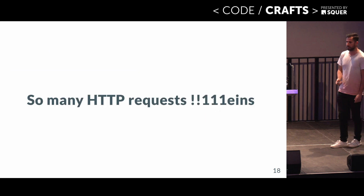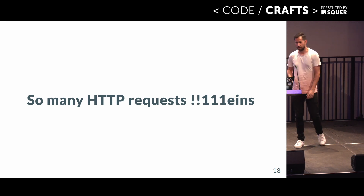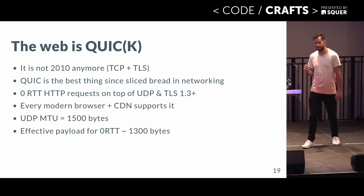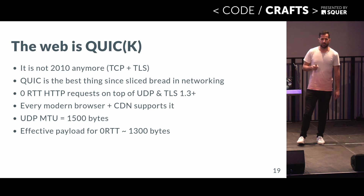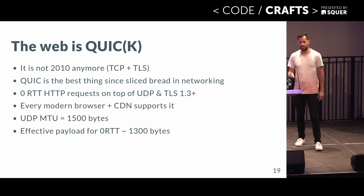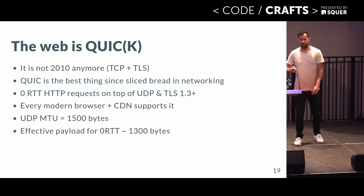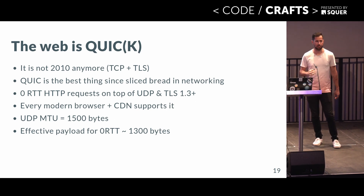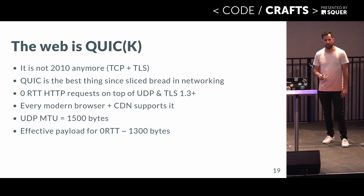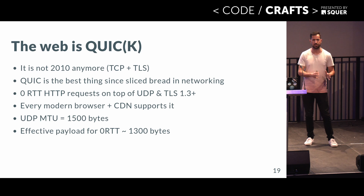Now you're going to say, Thomas, this is stupid — we're going to have so many HTTP requests, this is going to be really slow, a constant round trip back to the server, no good. Well, it's not 2010 anymore. The web is pretty quick, because we have QUIC now, which is literally the best thing since sliced bread in networking. It's a UDP-based protocol, and we can do zero round trip HTTP requests on top of UDP, all encrypted with TLS 1.3. Every modern browser and CDN supports it — you're probably using it without even knowing, because browsers and servers just upgraded. The typical MTU for a UDP packet is 1,500 bytes. There's a bit of overhead for framing and encryption signatures, but we get an effective payload of about 1,300 bytes for that UDP packet — the single thing that can be sent over the wire as a single chunk.